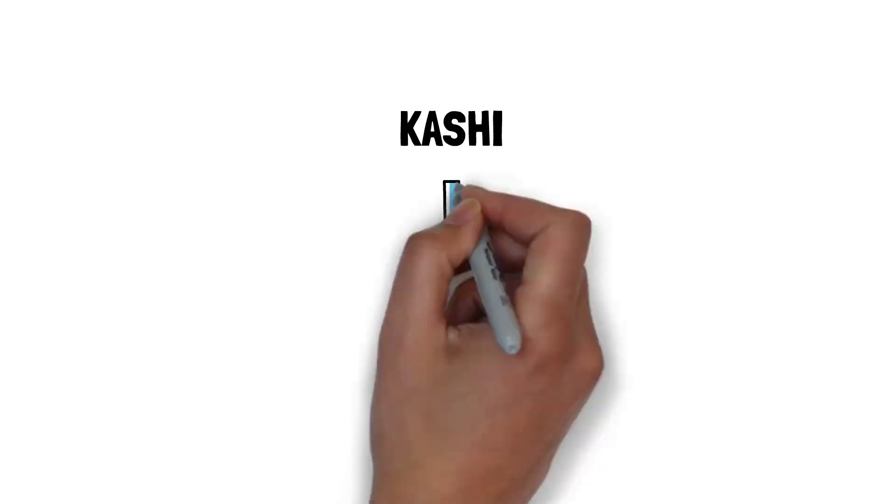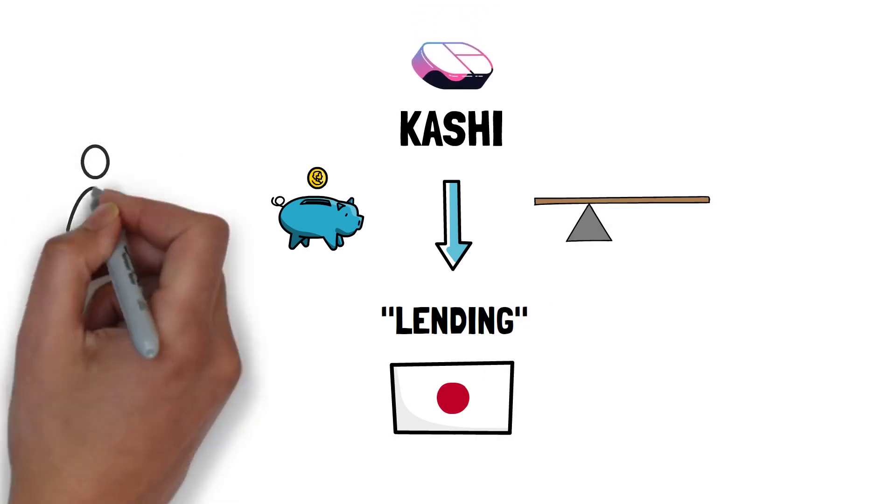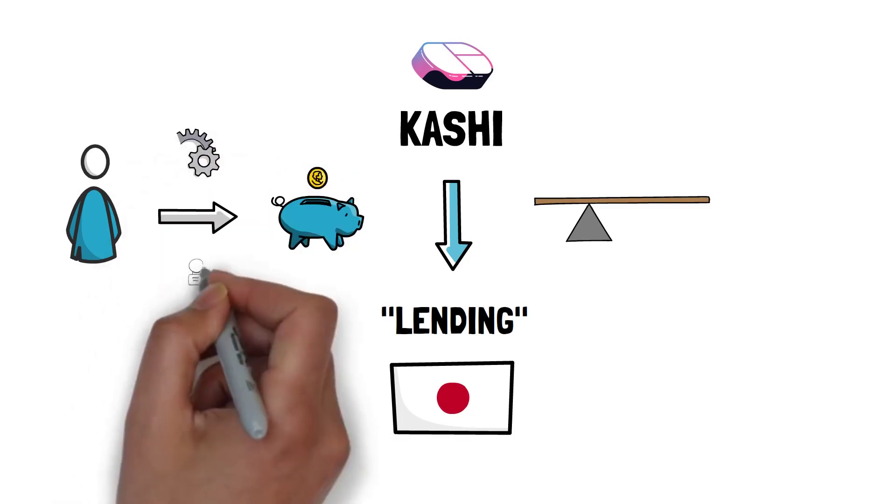And this is a good segue into Kashi. Kashi, which means lending in Japanese, is Sushi's first lending and margin trading solution powered by BentoBox. Kashi allows anyone to create customized and gas-efficient markets for lending and borrowing.